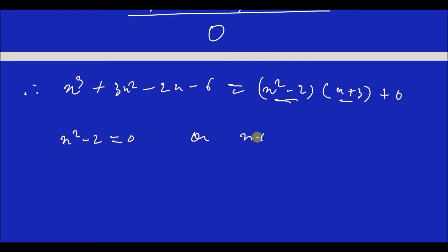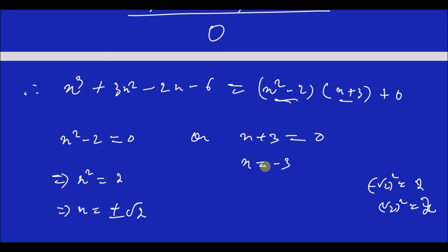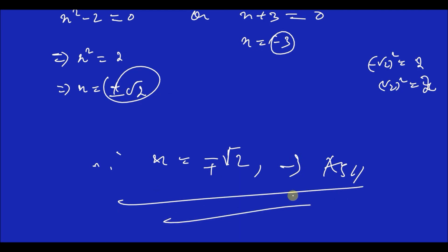Setting each factor equal to zero: x squared minus 2 equals zero, or x plus 3 equals zero. This implies x squared equals 2, so x equals plus or minus root 2. And x equals minus 3. Therefore the three zeroes of the polynomial are plus root 2, minus root 2, and minus 3.